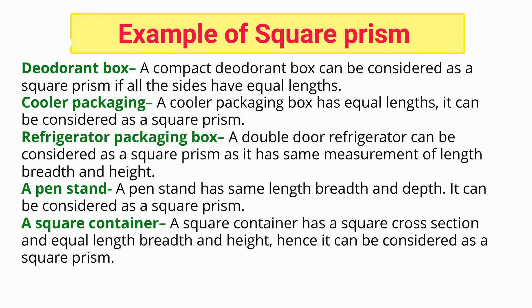A square container: a square container has a square cross-section and equal length, breadth, and height, hence it can be considered as a square prism.